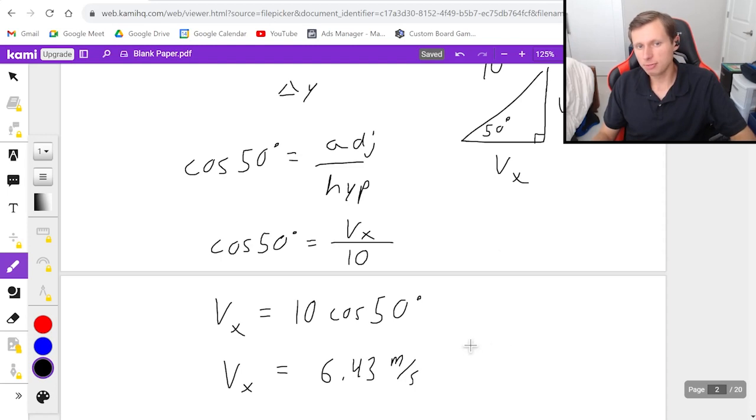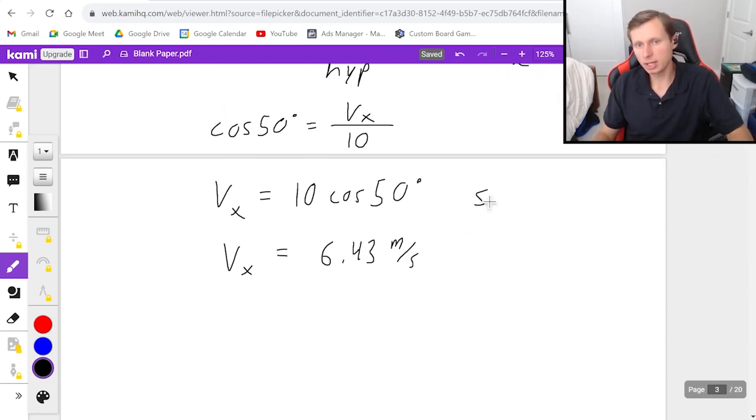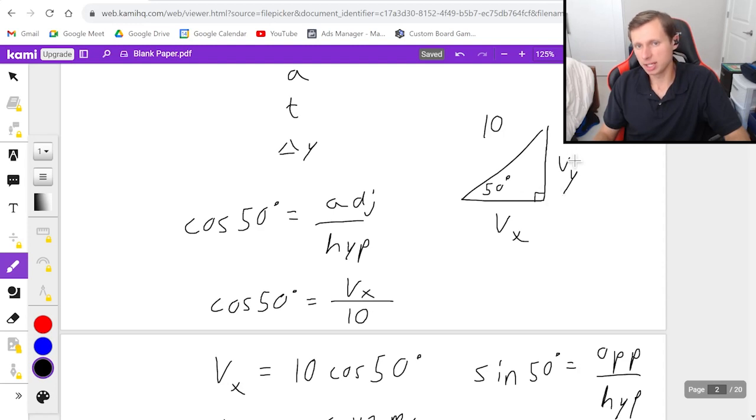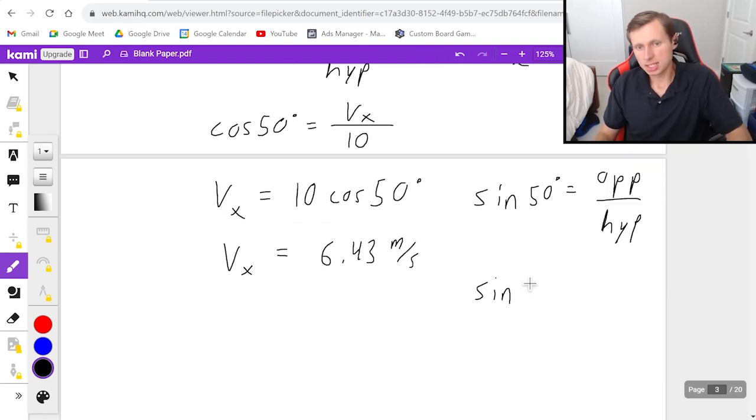And now if I want to find vy, I just do the same thing. But for the y component, I need sine of 50. And that's because sine is always the opposite over the hypotenuse. And we know that the opposite leg is vy, because it's opposite of the 50 degrees. So we would say that sine 50 is equal to opposite, which is vy, divided by hypotenuse, 10, multiply both sides by 10, and vy equals 10 sine 50.